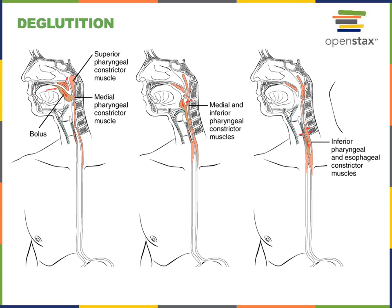This transitions into the esophageal phase of deglutition, where the muscularis propels the bolus from the proximal end — where there is skeletal muscle — down into the smooth muscle found in the distal two-thirds of the esophagus. Eventually the bolus is propelled through the esophagus into the stomach using the mechanism of peristalsis.